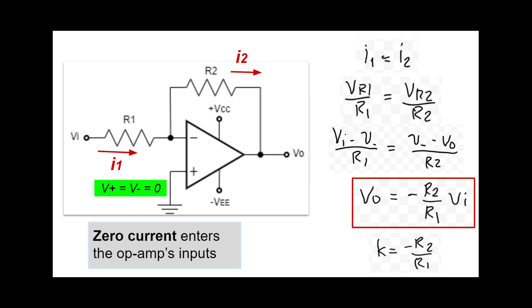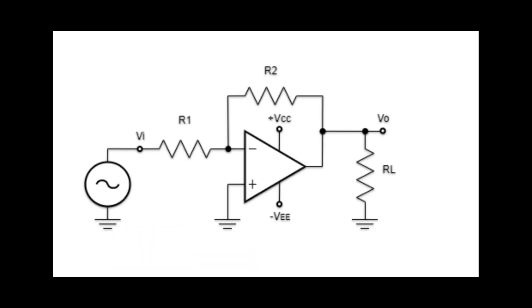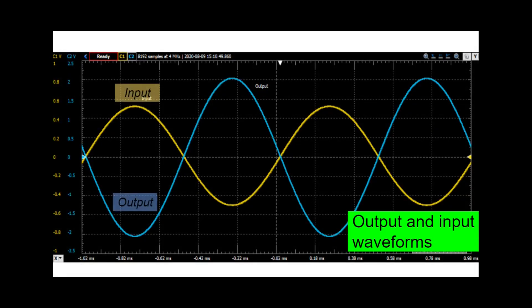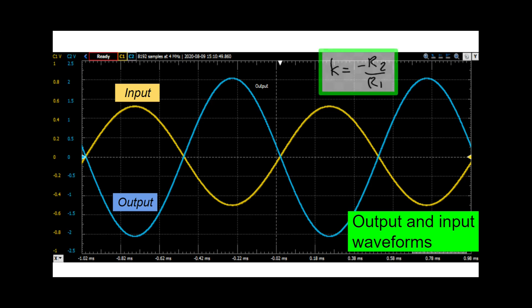How will the voltages look like? Let's assume that we have a signal generator that will provide an input sine wave, and then observe the output which is measured across a load resistor. You notice that Vo, the blue line, is a bigger version of Vi, the one in orange. Also, notice that as the input voltage goes up positive, the output Vo goes negative. That's what the negative sign for K means to us.